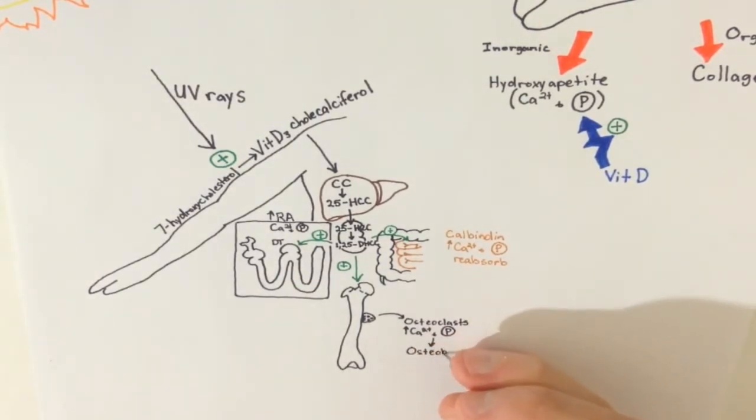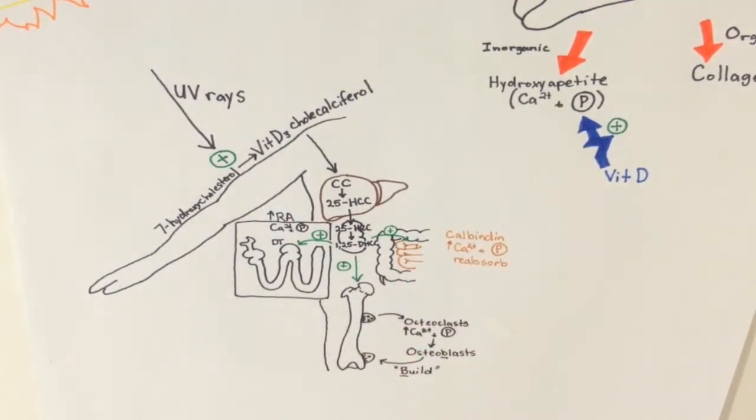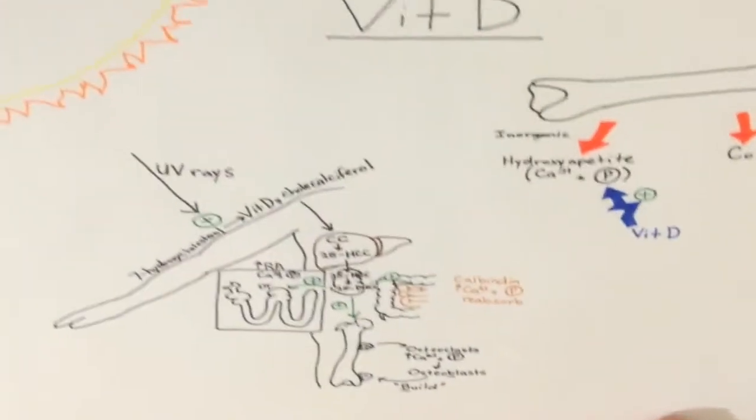Also, the thyroid and parathyroid are big contributors in this process of calcium regulation. But instead of going into detail, just know that the thyroid decreases blood calcium via calcitonin, and the parathyroid releases parathyroid hormone, which increases calcium levels.